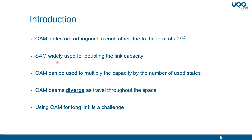Because of this property, all OAM states are orthogonal to each other. The spin angular momentum is widely used for doubling the microwave link capacity using left-handed and right-handed circular polarization. But because of the orthogonality of OAM states, they can also be used to multiply the capacity of microwave links by the number of used states. However, using OAM beams is challenging for long-range microwave links because they diverge as they travel through space.